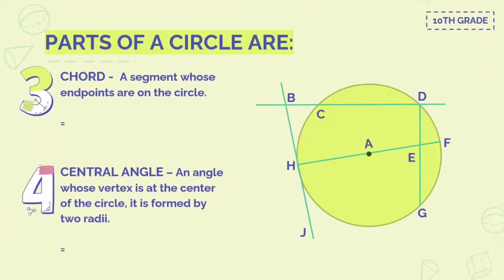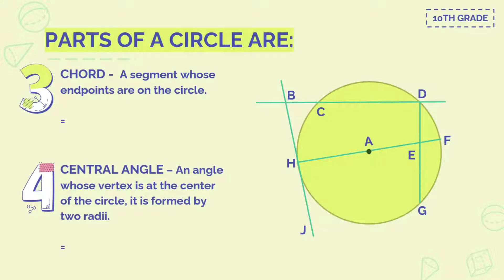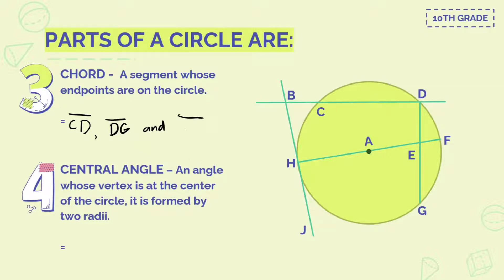Number three — chord. Chord is a segment whose endpoints are on the circle. We're not focusing on the center here; we focus on the endpoints, which are on the circle, not the outside. Chord is like a diameter — CD. We have C and D as endpoints inside the circle. Also line segment DG, and also line segment HF.